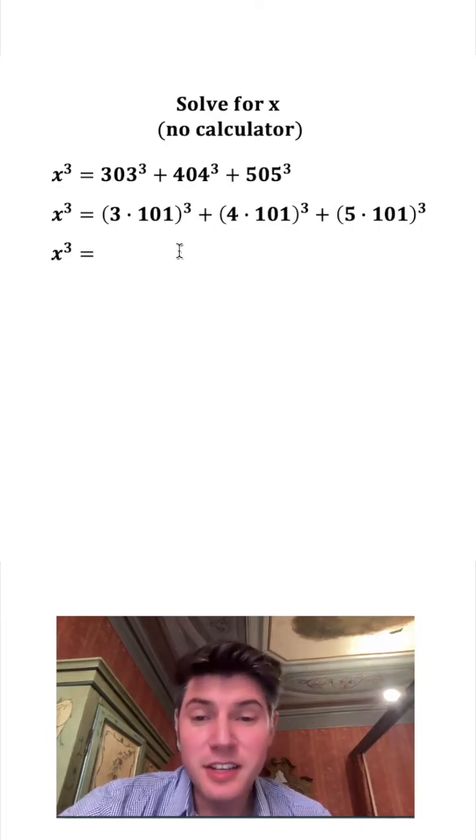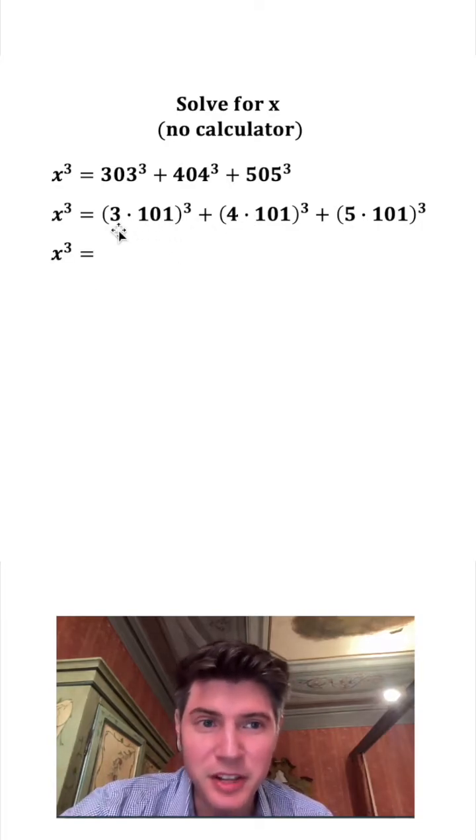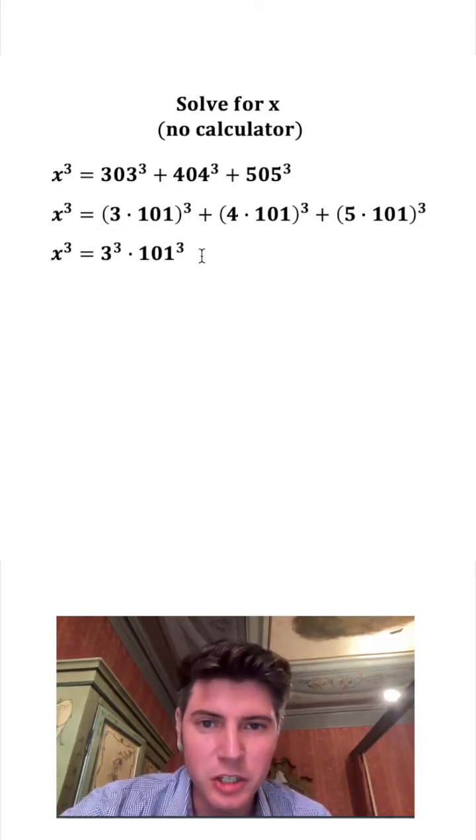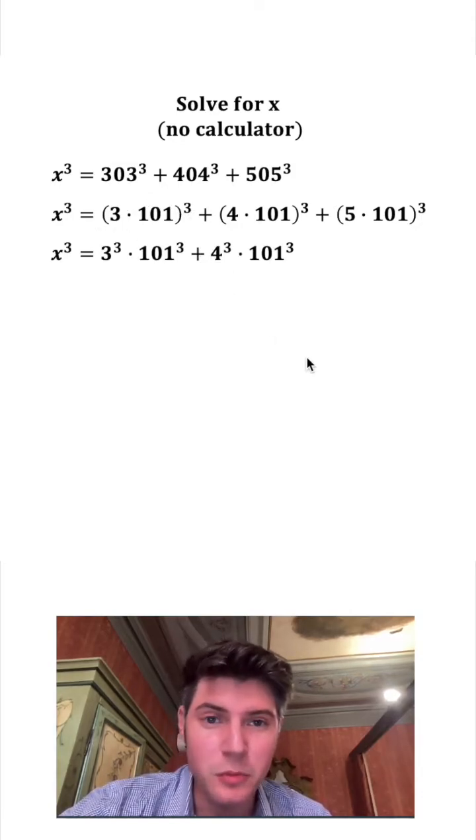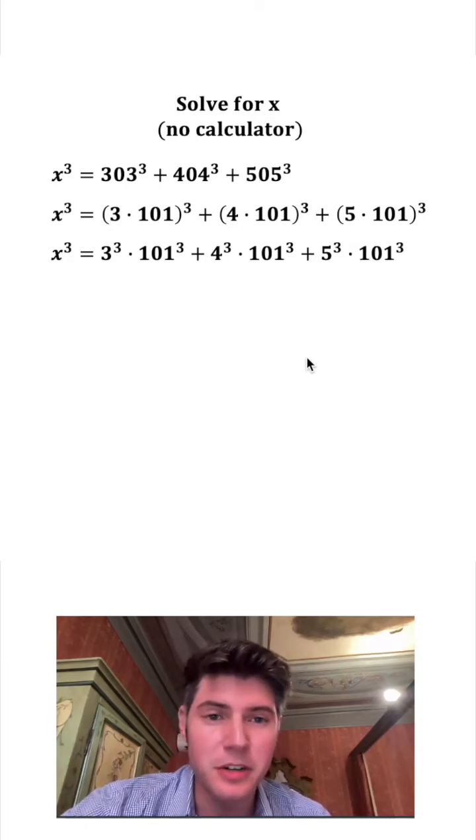Let's bring down x cubed again. Since this is multiplication inside of the parentheses, this cubed can be distributed to both. So we have 3 cubed times 101 cubed plus 4 cubed times 101 cubed plus 5 cubed times 101 cubed.